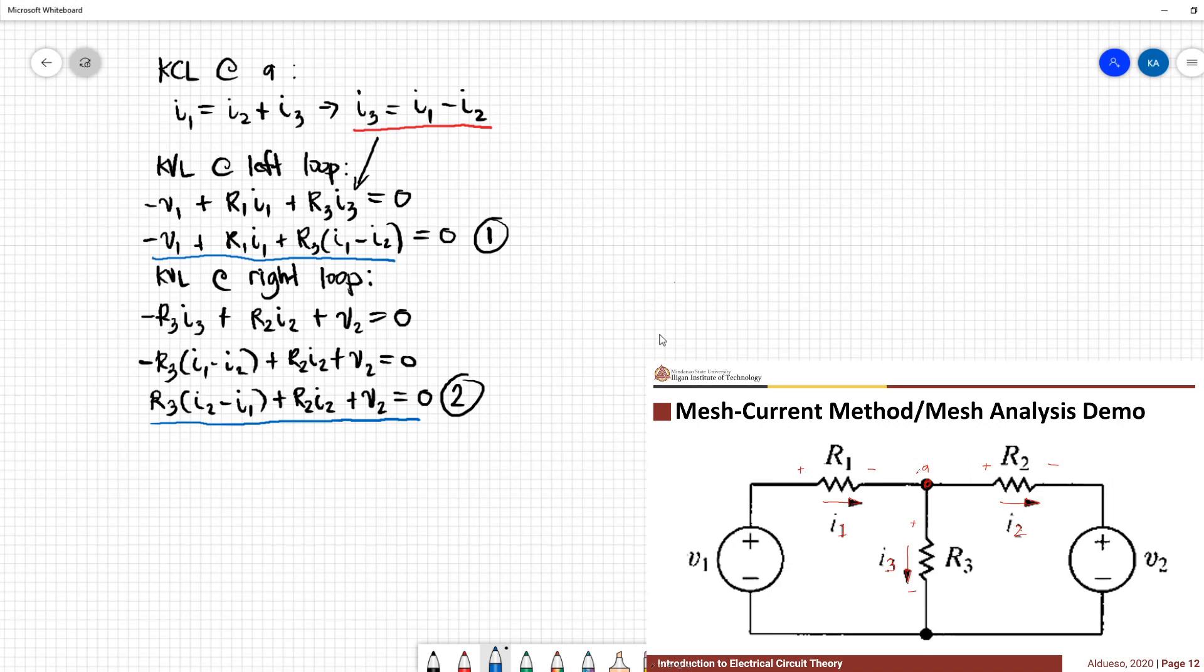Now let's assign mesh currents to this circuit. We apply mesh currents to the two meshes we have: this mesh, let's assign as mesh current Ia, and this mesh right here as mesh current Ib. The direction of the mesh current is arbitrary, so you can choose clockwise or counterclockwise, but for simplicity and to minimize errors we'll choose clockwise for all mesh currents.